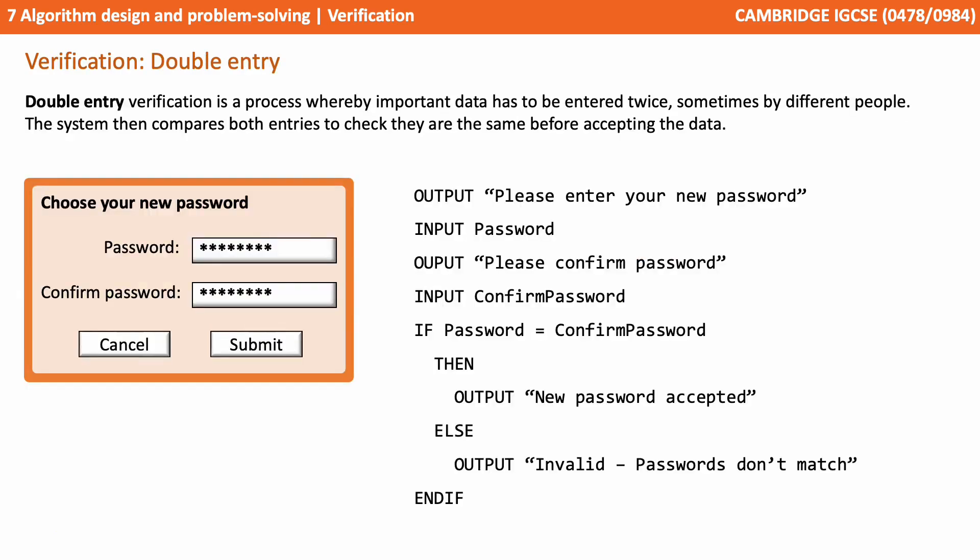There are two main methods of verification you need to be aware of. The first is double entry. With this verification, it's a process whereby important data has to be entered twice, sometimes by different people. The system then compares both entries to check they're the same before accepting the data.